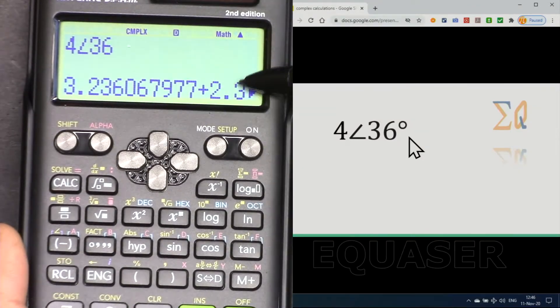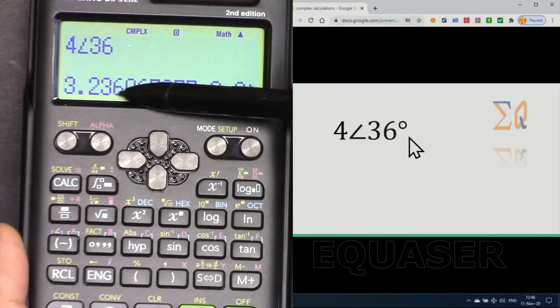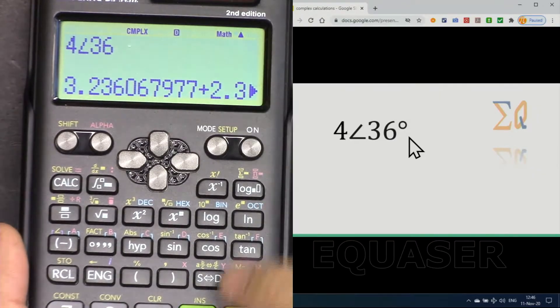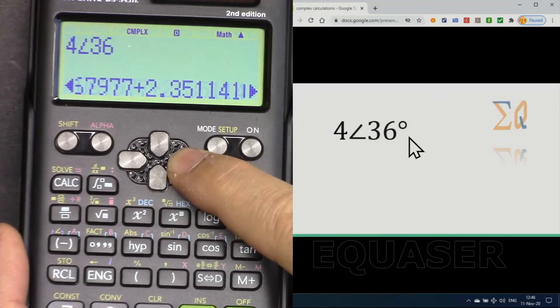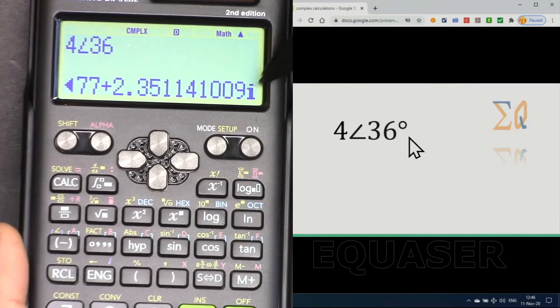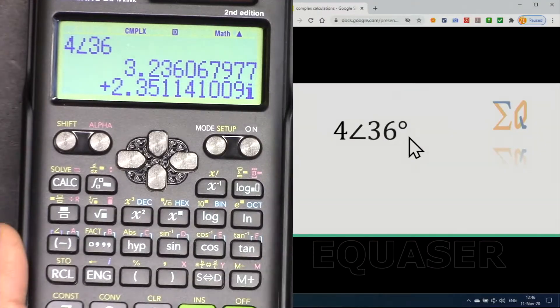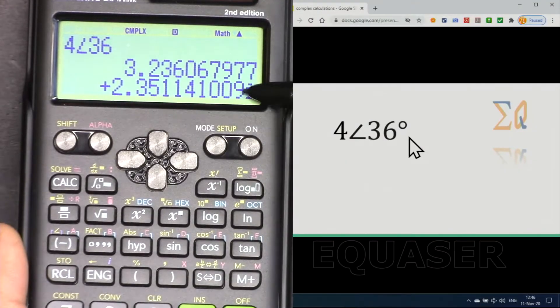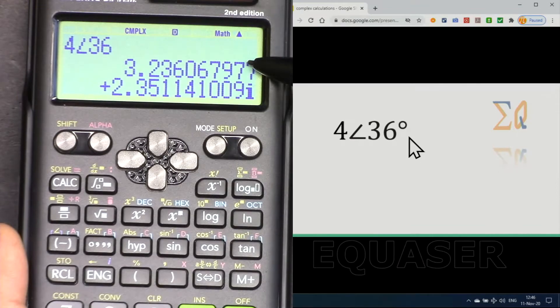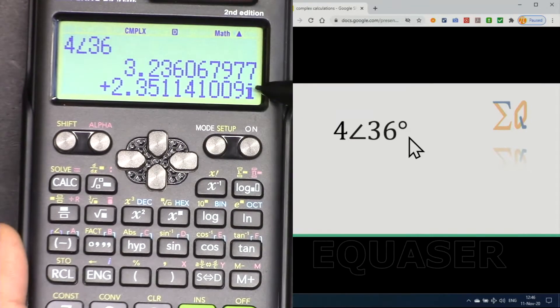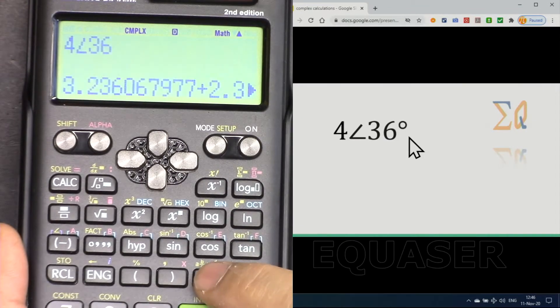Now if I press equal sign, it shows real and imaginary: 3.23. If I scroll to the right, you will see that i is here shown. If I press this button, it makes it very easy and clear. You can see it, this value: the real plus imaginary value here. Using this you can go back.